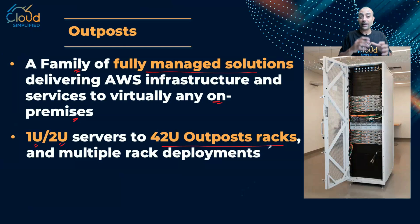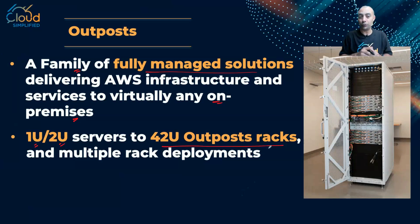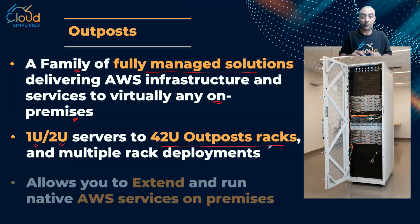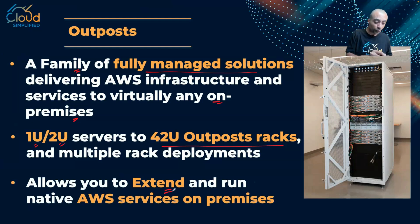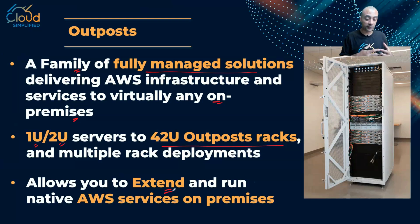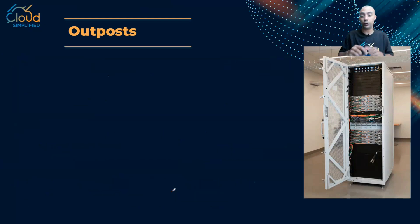This is a rack, and the beauty about this rack is it comes pre-configured and pre-cabled, so you have everything. All you need to do is connect this rack into the network and into the power, and you will see it as an extension to your AWS Cloud. This Outpost allows you to extend and run native AWS services on your physical Outpost inside your data center.